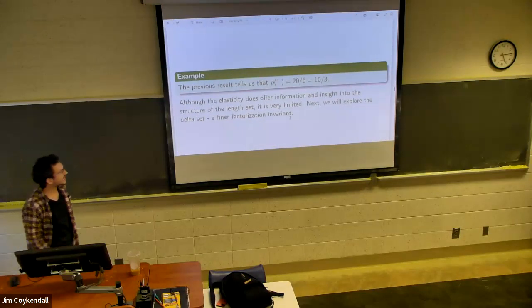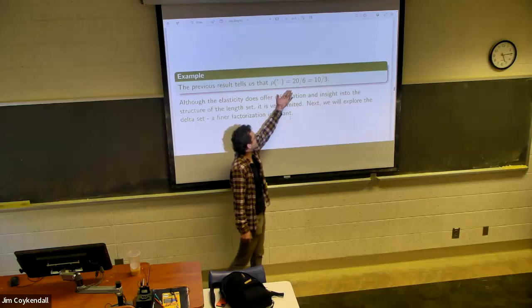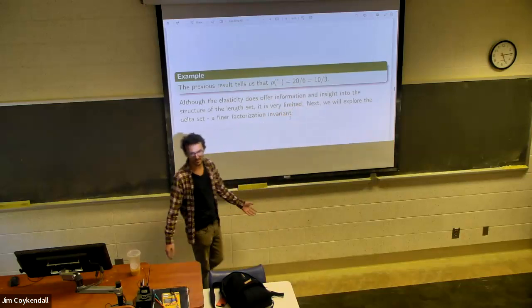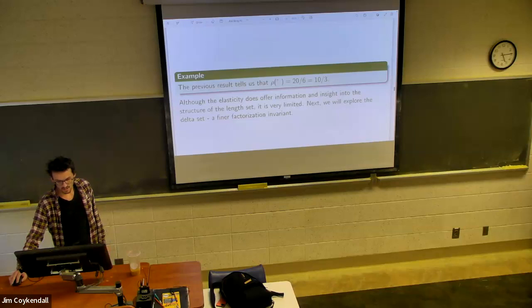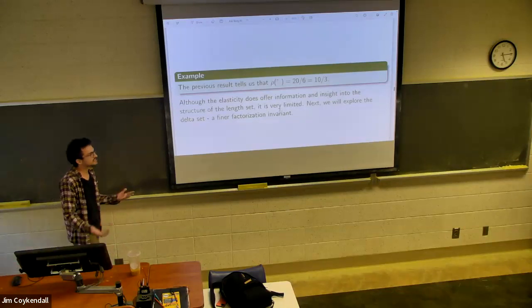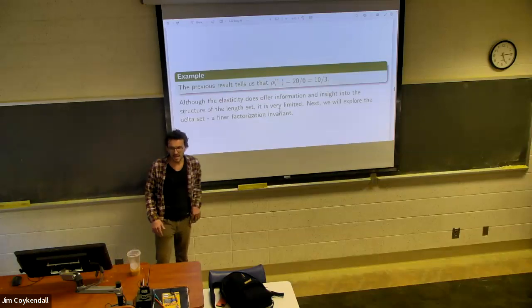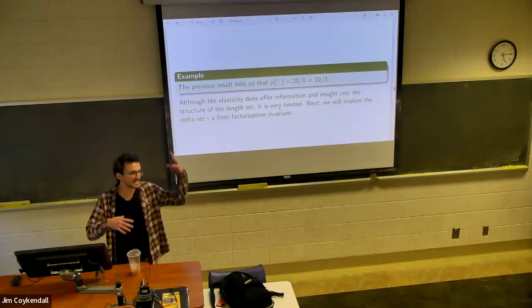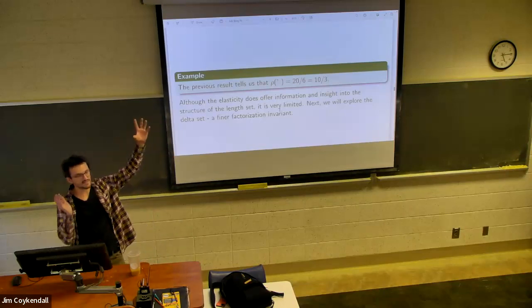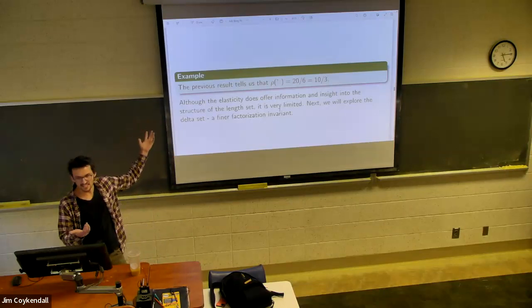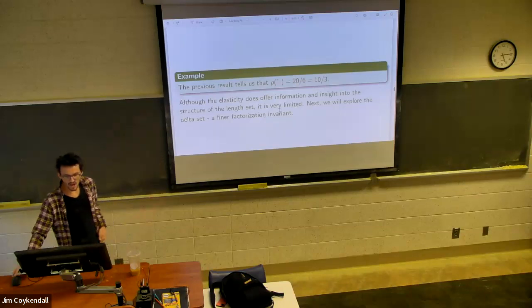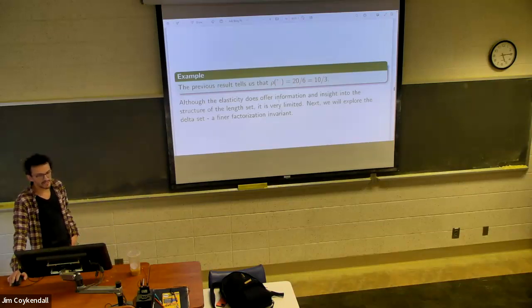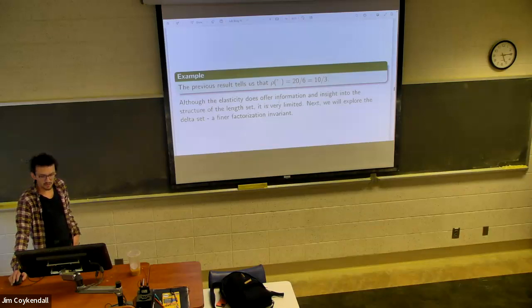So rho of the chicken is super simple to calculate. 20 over 6, simplifies to 10 over 3. So nice, clean, it kind of measures the spread. But as you might imagine, you lose a ton of information because you're just taking the max of the lengths, dividing it by the minimum, and that's the elasticity. So you lose a lot of information when it comes to describing the set of factorizations. So, you know, I wouldn't say that this is the best invariant, but it's a good one.